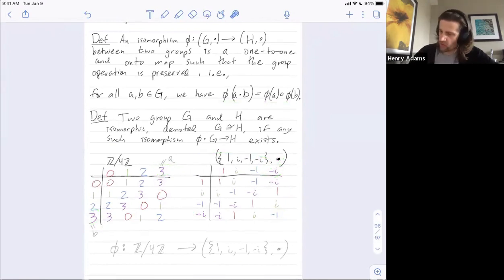So this group structure preservation property is saying it has to happen for all elements a and b. So for all possible inputs a and b in the first group, whatever you choose them to be, whether you combine them in the first group and then map over to the second group, you should get the same answer as mapping each element over to the second group and then combining using the operation in the second group. Any questions?